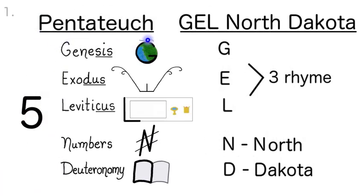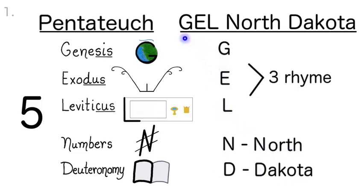The initials of the Pentateuch in Section 1 are G-E-L-N-D for Gel North Dakota. Gel is like a gel pen you write with, or when the water and lakes get frozen in North Dakota.